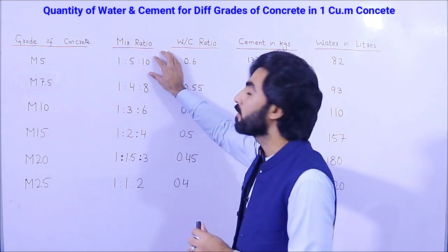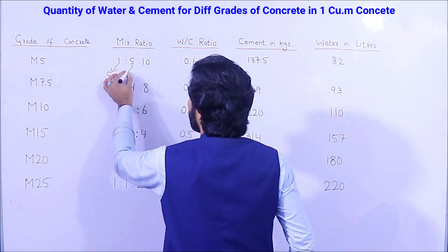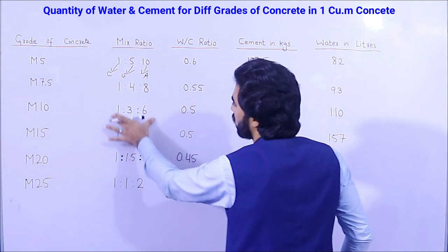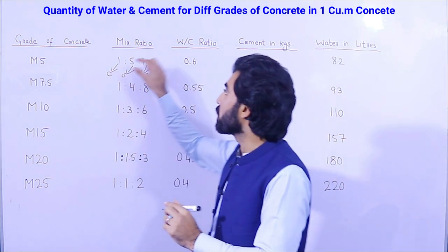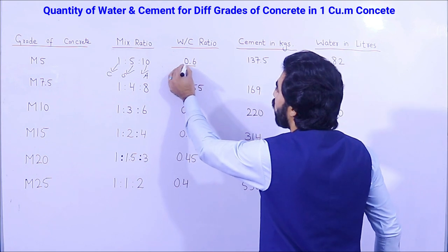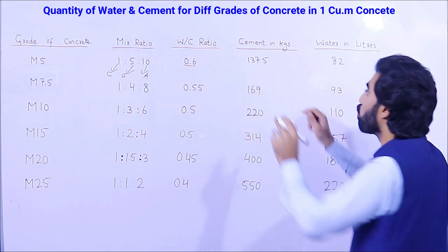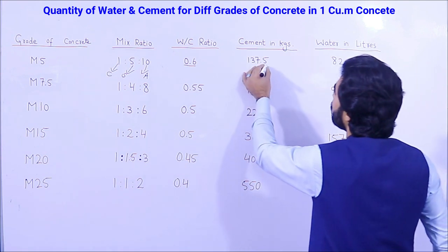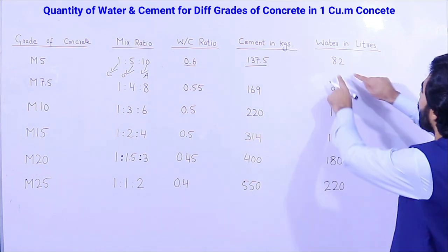For M5 grade of concrete, the mix ratio is 1:5:10 where 1 is cement, 5 is sand, and 10 is aggregate or crush. The water-cement ratio for M5 is 0.6.